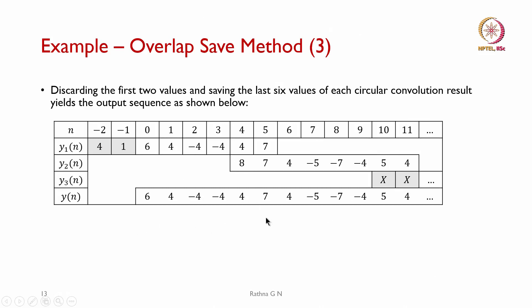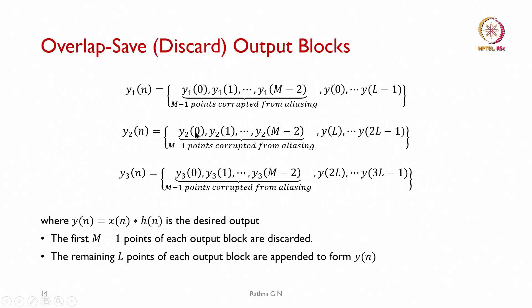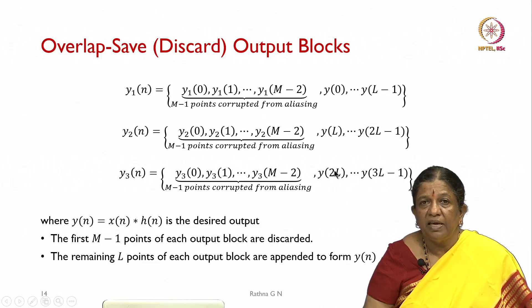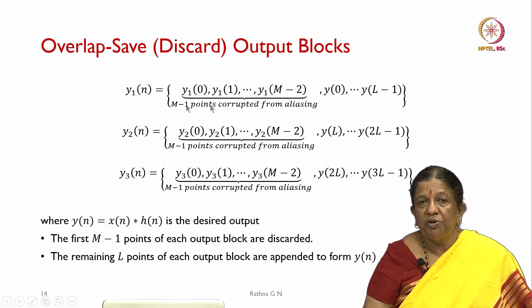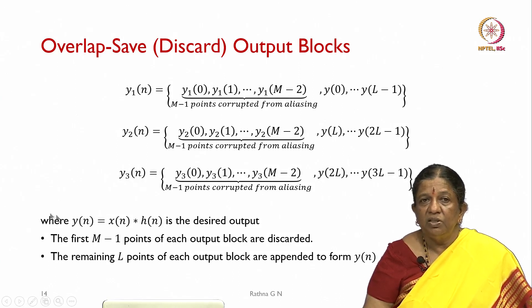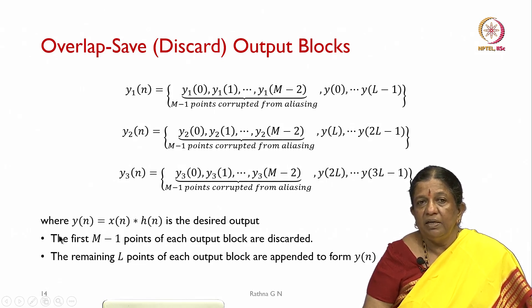This is how the overlap-save method works. The first m minus 1 points of each output block are discarded, and the remaining N points of each block are appended to form y(n). This is equivalent to regular linear convolution of x(n) with h(n). Both overlap-add and overlap-save methods correctly compute the output for long sequences.